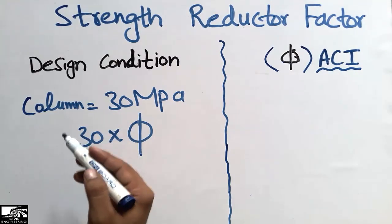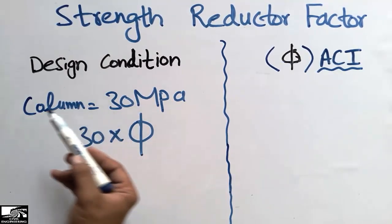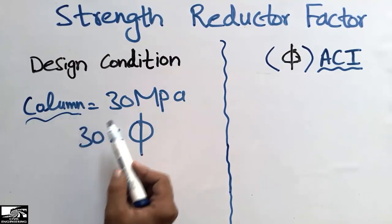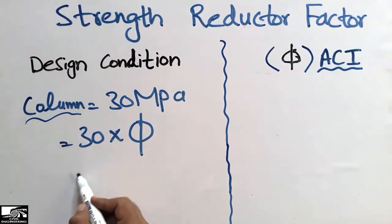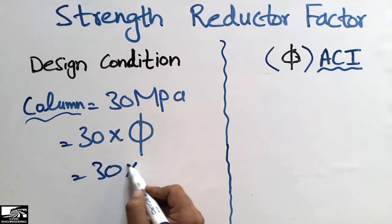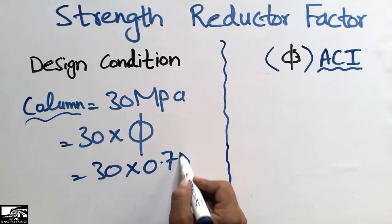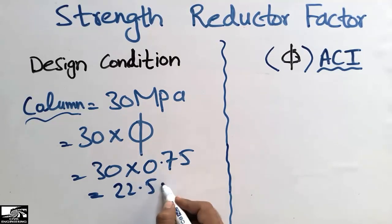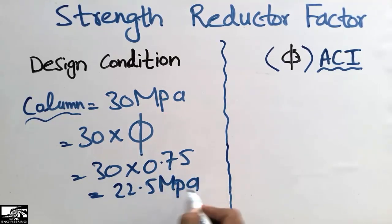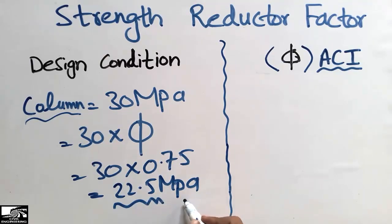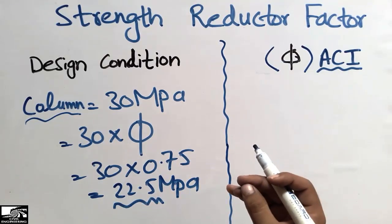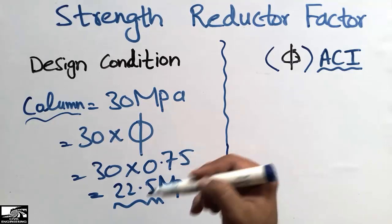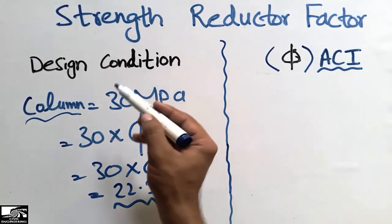Phi has different values as specified by ACI for different types of design conditions. For example, for a column, it is recommended to use a strength reduction factor of 0.75. We multiply this with the actual strength of the concrete to get the minimum design strength of the column, which gives us our factor of safety.